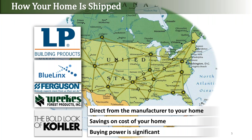Just touching on how your home is shipped — we buy direct from the manufacturer for many, many items. You can see brand names we use on the screen: LP Louisiana Pacific, Blue Links (formerly Georgia Pacific), Ferguson plumbing distributor, Weeks Forest Products, Midwest Lumber and Wood Products Distributor, Kohler, Moen, Delta, Owens Corning. All of these brand name products we purchase in volume, giving us significant buying power. Some items like windows, cabinetry, trusses, and I-joists deliver direct from the manufacturer to your home, which saves a lot of cost on construction.